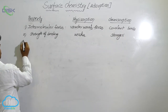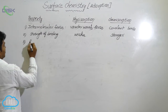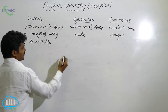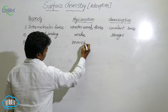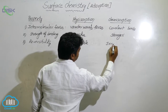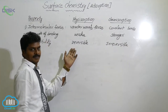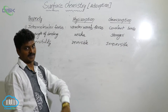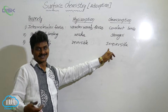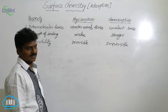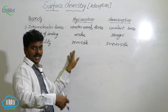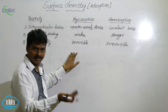The third property is reversibility. Physical adsorption is reversible, whereas chemical adsorption is irreversible. Physical adsorption is reversible because adsorption and desorption take place simultaneously — it occurs in two directions. But in chemisorption, causing desorption is very difficult, so it is irreversible — it occurs in only one direction.